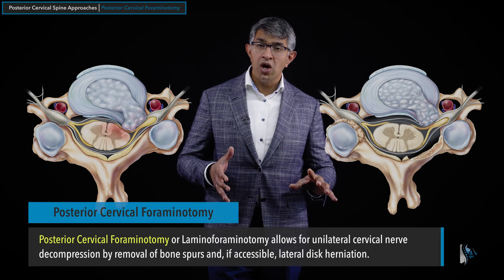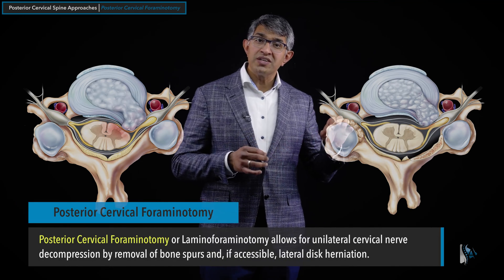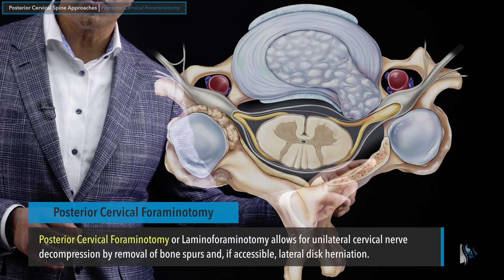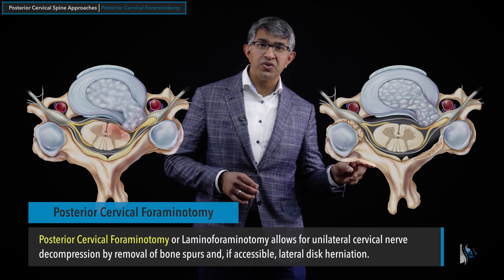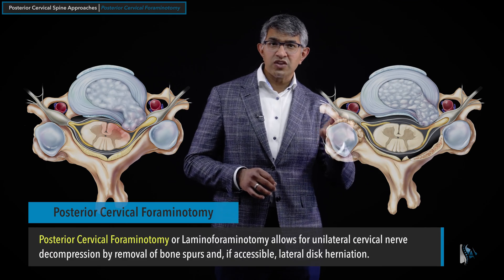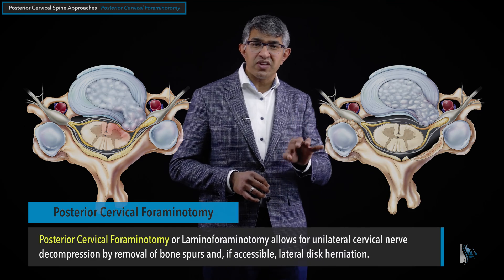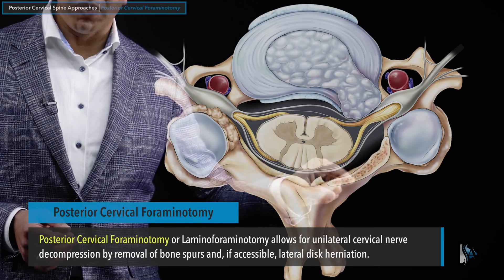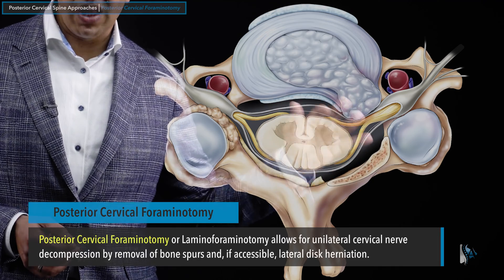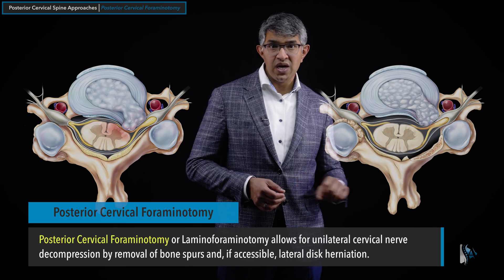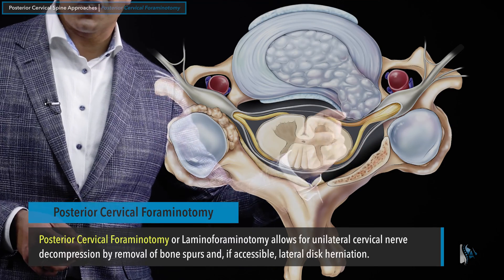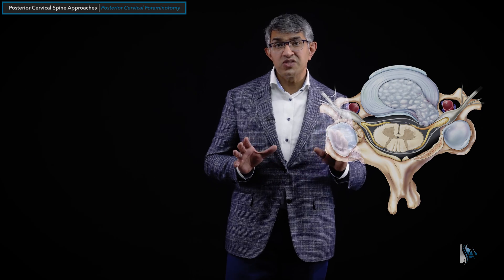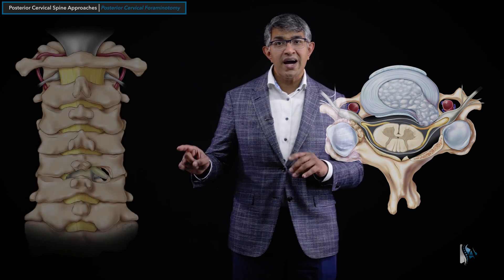A posterior cervical foraminotomy or laminoforaminotomy allows for decompression of a single cervical nerve generally — it's usually a unilateral procedure. You could decompress both sides, but it really doubles the procedure; it's exactly twice as hard. So it's a procedure I would typically reserve for unilateral cervical nerve decompression. You would primarily remove bone spurs and unroof the nerve. You can do that very reliably, especially the structures behind the spinal nerves. And if the disc herniation is accessible, you can sometimes reach around and pull that out as well, all through a cervical foraminotomy.